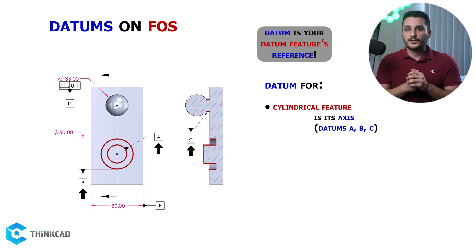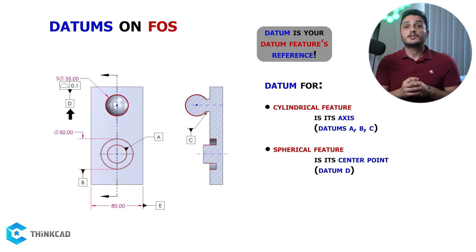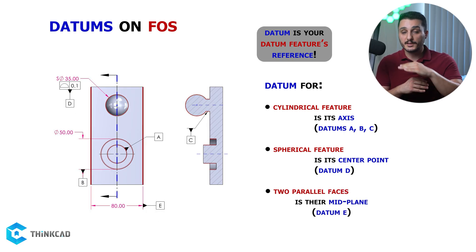So for a cylindrical feature, datum will be its center axis. For a sphere, it will be its center point, and for two parallel surfaces, it will be their mid-plane.